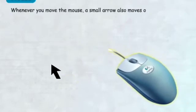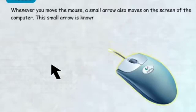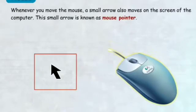Whenever you move the mouse, a small arrow also moves on the screen of the computer. This small arrow is known as the mouse pointer.